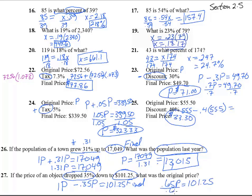Divide by .65, and so P equals 101.25, divided by .65, and we get 155.77. And there we have it.